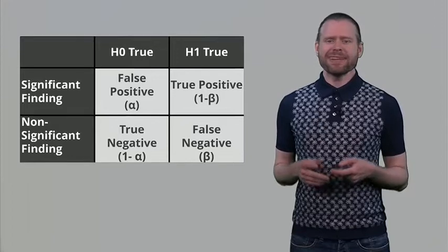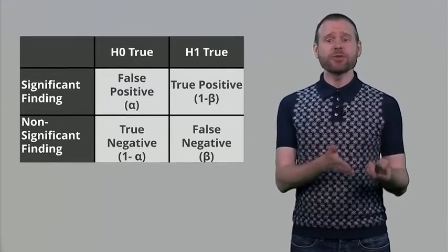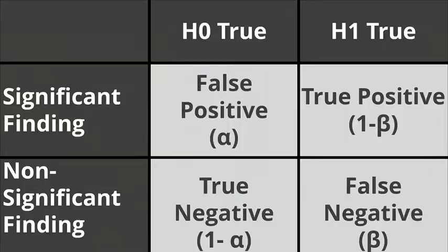Now remember that in any single case you are either sampling from a true effect or from a false effect, so you are in one of two parallel worlds. Either there is no true effect and then you can only make false positives or true negatives. Or you are doing research where there is actually a true effect and then you can only make a correct conclusion — a true positive or a false negative.